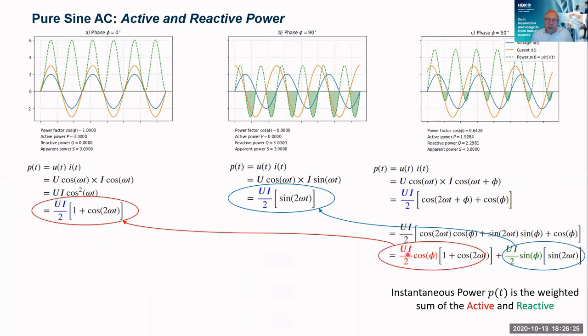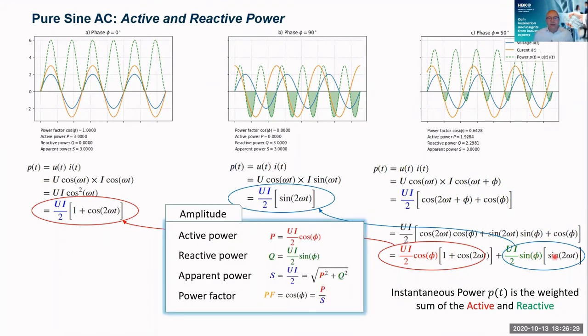And the weighting all depends on these two amplitudes here. And this is what I'm going to define as being our standard, if you like, our definition. So the amplitude of the active power is UI/2 cos(φ). The reactive power is UI/2 sin(φ). And if we want the apparent power, UI/2, we can take the sum of the squares of those, and if we want the power factor, we can take the ratio of them.